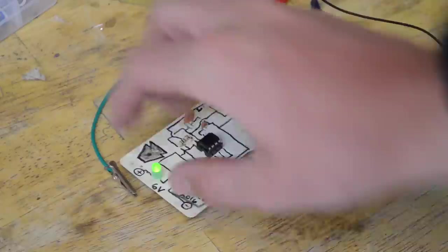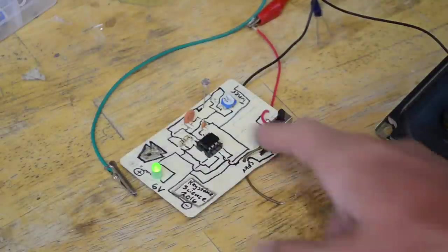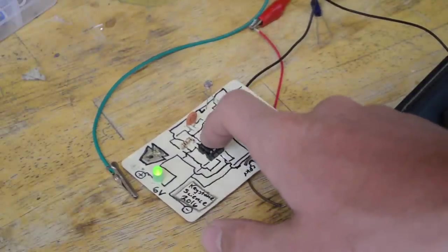It's important to note, I'm running this at six volts DC. Any higher, and your 555 timer chip will begin to burn up.